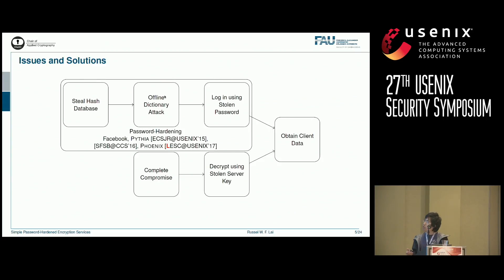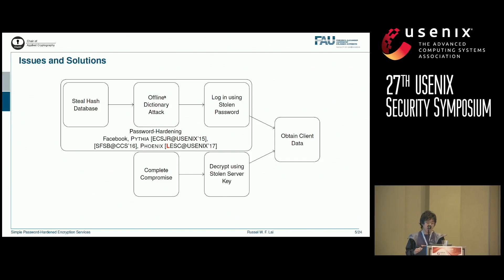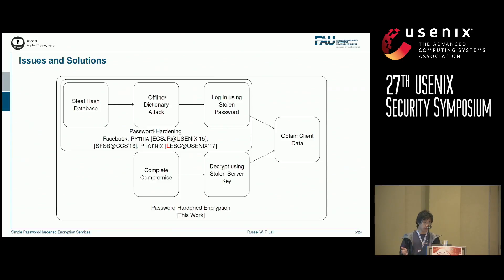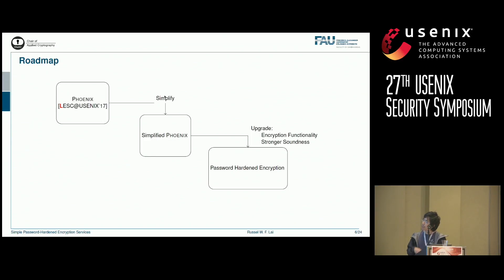Previous work focused on protecting the sorted hash part using a notion called password hardening, which was introduced by Facebook. Later, at Usenix '15, people formalized the idea and gave a quite efficient scheme called PIVIA, with some improvements in CCS '16. Last year, we proposed a scheme called Phoenix, which is very efficient, but still focusing only on the password or sorted hash part. So this year, we take care of the other part as well — even if the server secret key is learned, the attacker cannot decrypt the data. We take Phoenix, simplify it to be even more efficient, then upgrade it with encryption functionality and a stronger soundness guarantee.